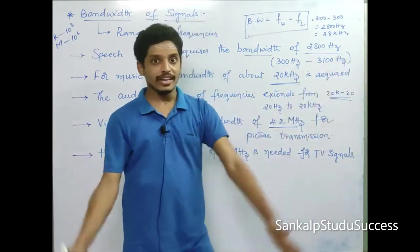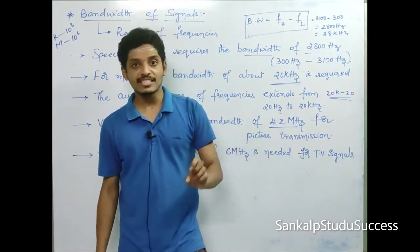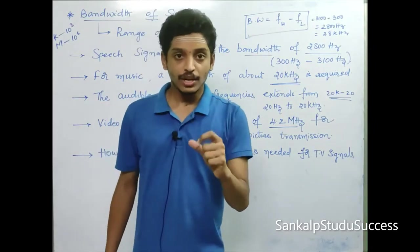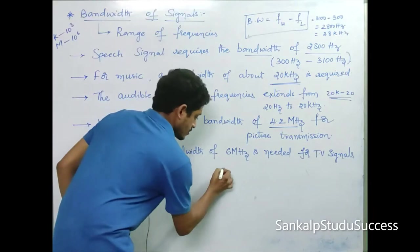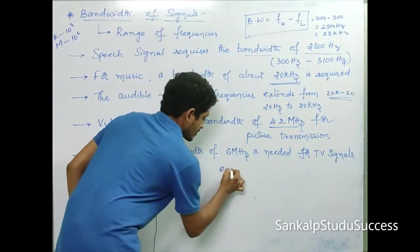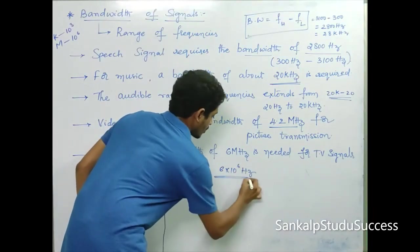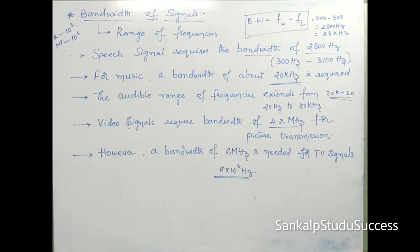TV signals are live broadcasting. If you want to watch video in HD quality, the frequency required is minimum 6 MHz, that means 6 × 10⁶ Hz. So these are the specific bandwidth ranges of different signals.